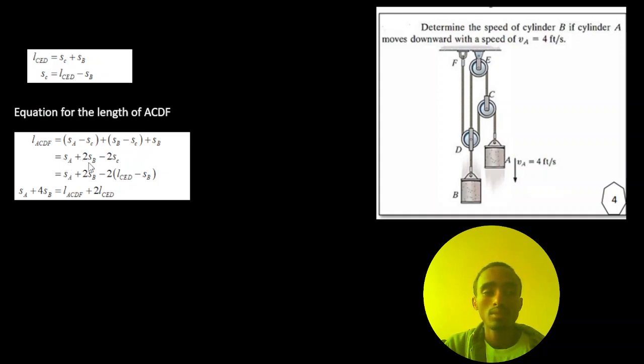Then simply we can substitute SD from here and we can get this simplified. After simplifying, SA plus 4SD plus SD plus 2LCD. It is a simplified form.